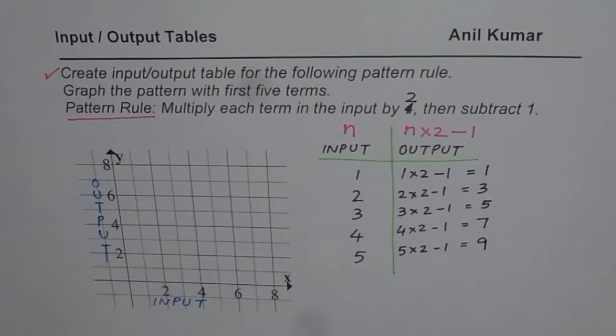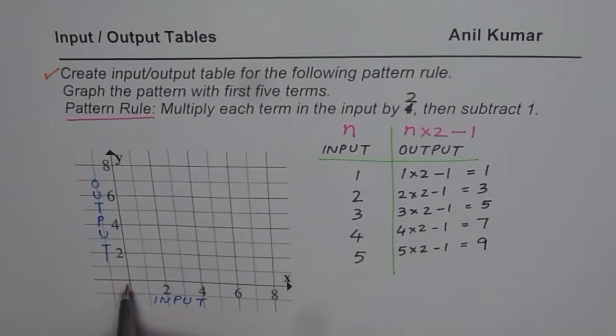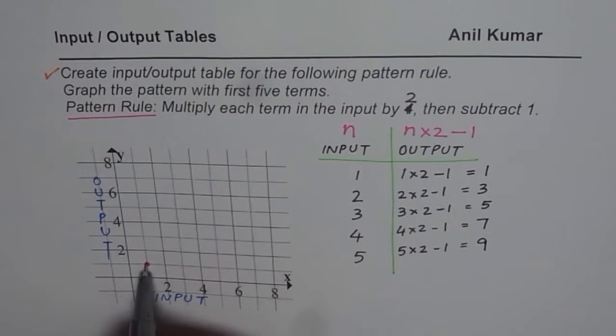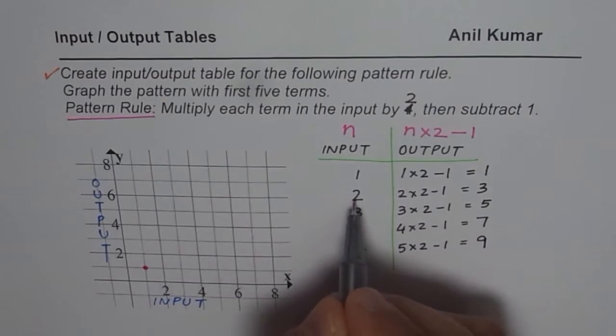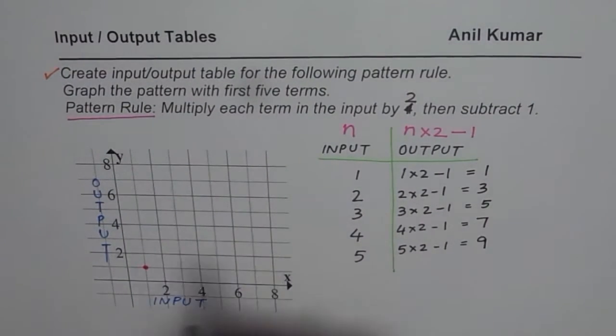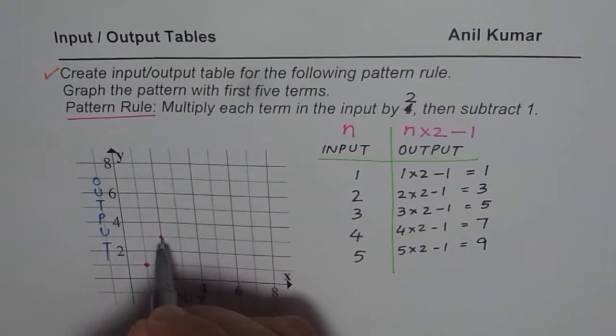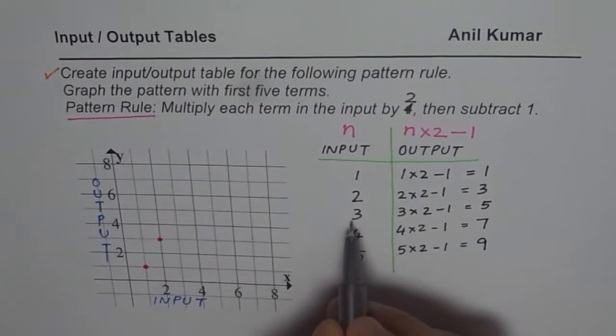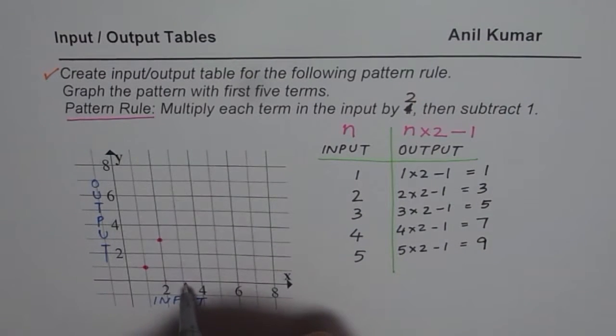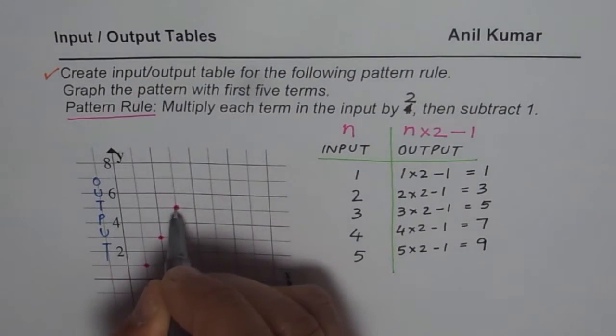Let's begin. If input is 1, output is 1, so we have to find a point where input is 1, output is 1. So output we have to go up, so we get this point. For the second one, input is 2, that means here, and output is 3. So 1, 2, 3, that is the second point. Third point is input is 3, output is 5. So for 3, output is 5, that is the point.